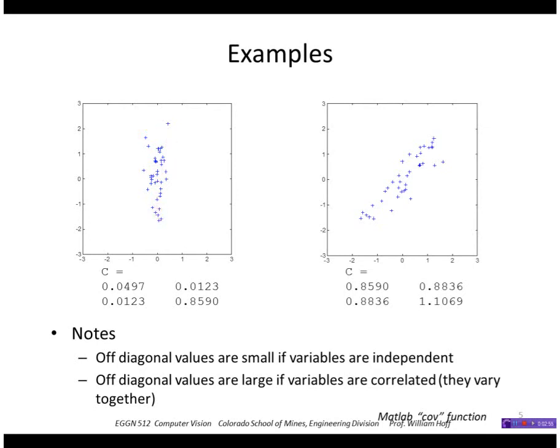If the off-diagonal elements are large, that means that those covariance matrix elements are large. In other words, where x is large, then y also is positive and large and so forth.